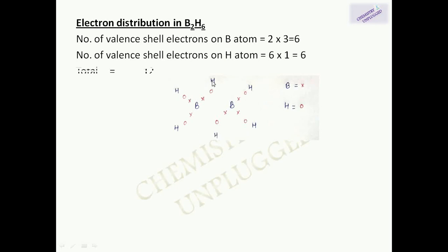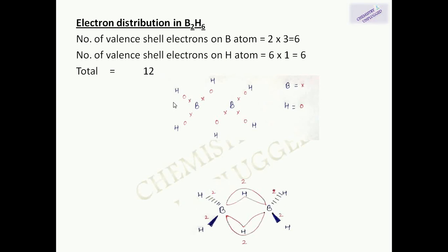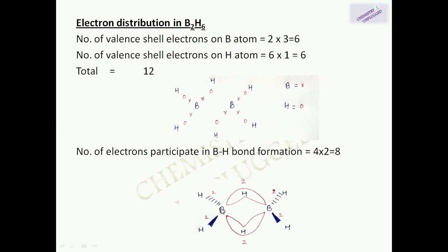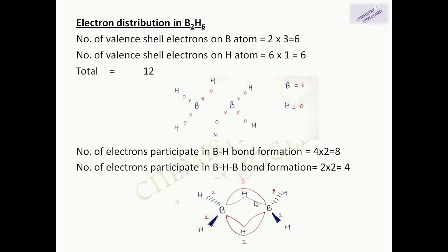So the total number of valence electrons is twelve. The number of electrons participating in BH bond formation is eight, because there are four BH bonds and each contains two electrons. The number of electrons participating in BHB bonds is four, as each BHB bond also contains two electrons.